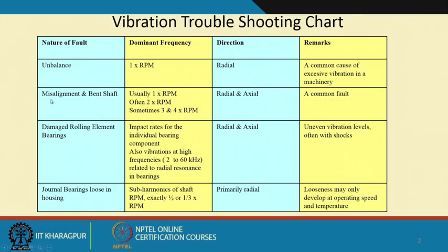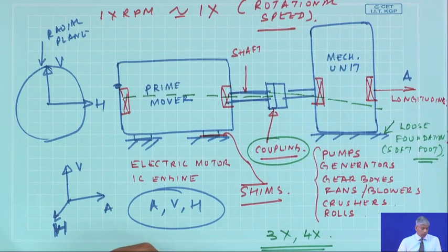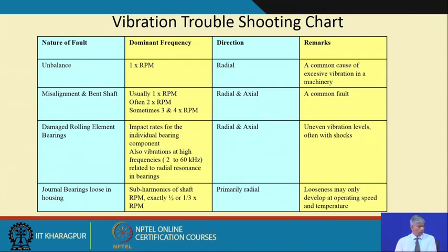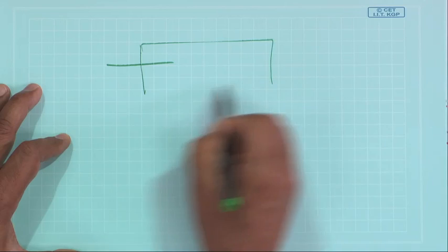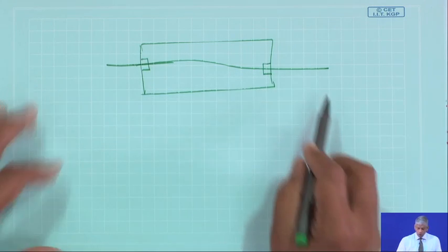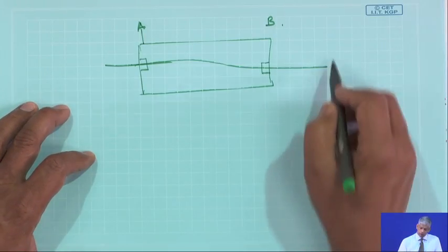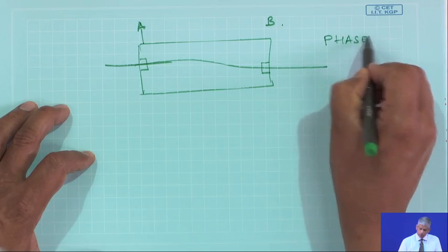If there is a misalignment, usually there are axial vibrations also, and you will see 3 to 4 times x also occurring in the case of misalignment. This also occurs in the case of bent shafts - if shafts are bent, there is a heavy spot.